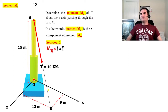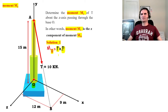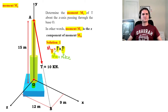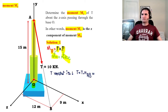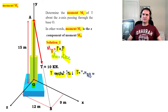Any moment about any point — for example O — is just a displacement vector times force, and because we are in 3D space it is a cross product: R cross product F. R is our arm (displacement), arm times force is a moment. Our force is a tensile force in vector format: vector T equals the numeric value of T times the unit vector from A to B in 3D space.